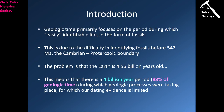Early geologists essentially said: we don't have fossils in these rocks, so it's difficult to split them into individual units. We're going to lump all of these fossil-free rocks together and call them the Precambrian. They had no idea what amount of time this actually represented. The earth is about 4.56 billion years old, and life in the form of macro fossils didn't appear until about 541–542 million years ago, meaning there's approximately 4 billion years of geologic time without macro fossils.